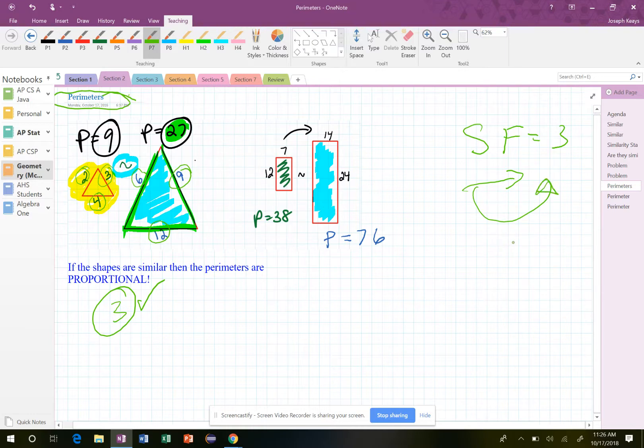So not only are the sides proportional, but the perimeters are proportional as well. And that's what this says right here. If the shapes are similar, then their perimeters are also proportional.